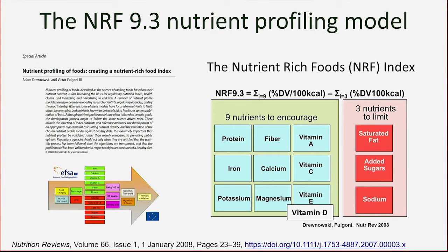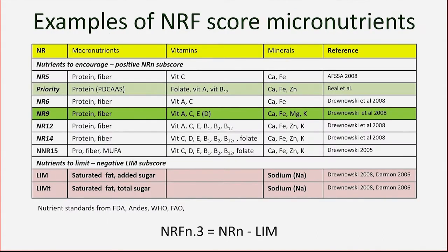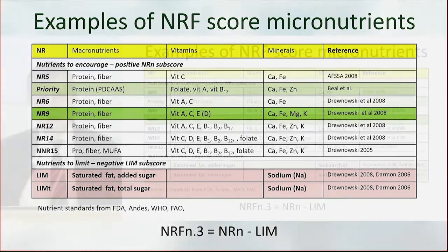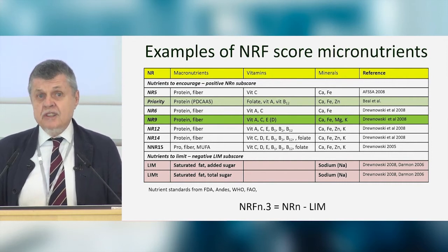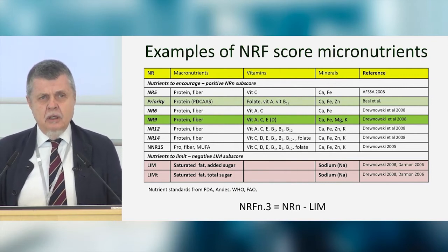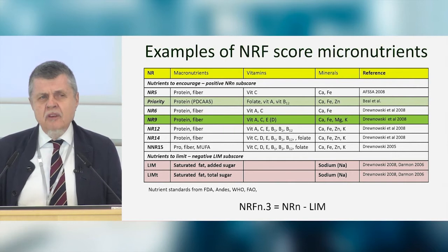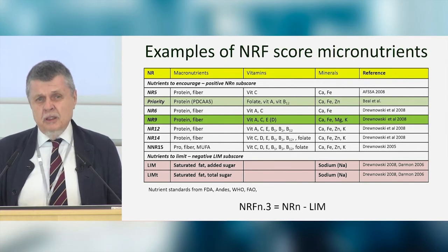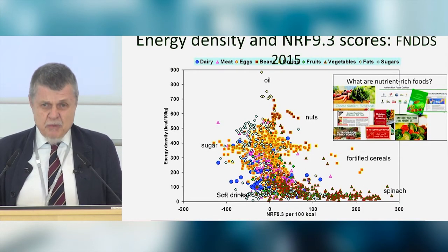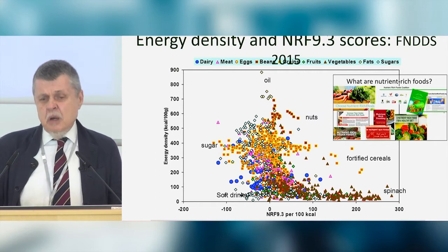In developing this model we went through every permutation of nutrients — positive and negative — and found the combination with the best correlation with an independent measure of a healthy diet. In nutrient profiling, having more nutrients is not an advantage — fewer is better. They need to be discriminating, and especially outside North America, nutrient composition databases are limited.